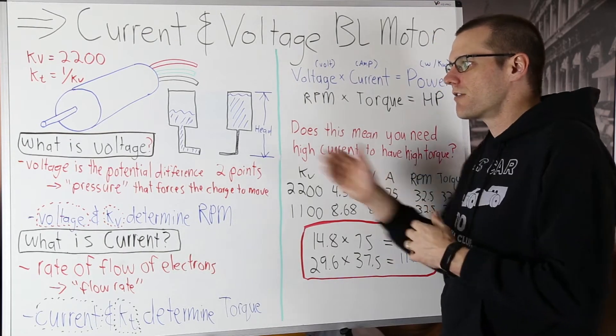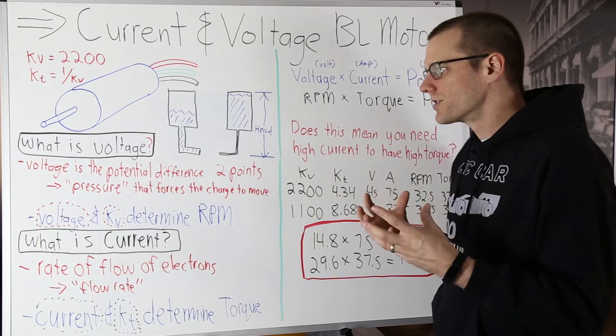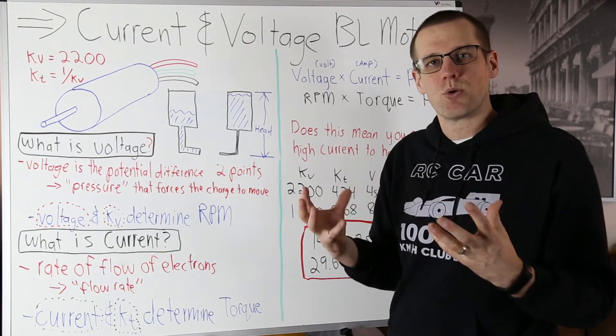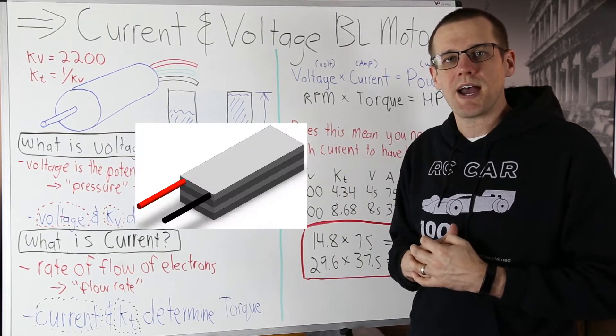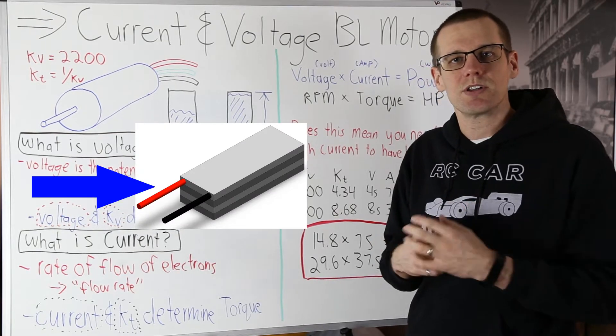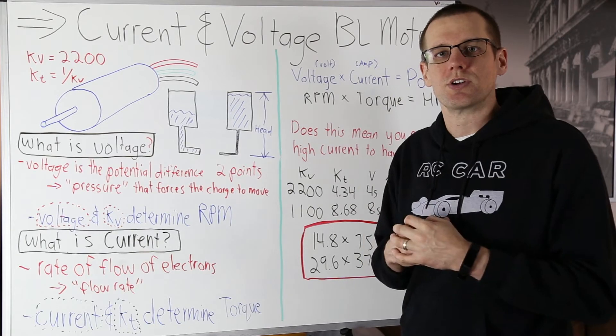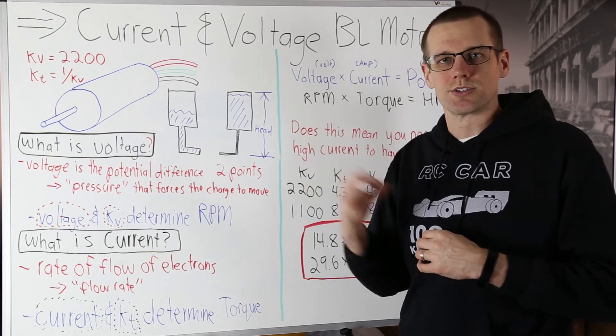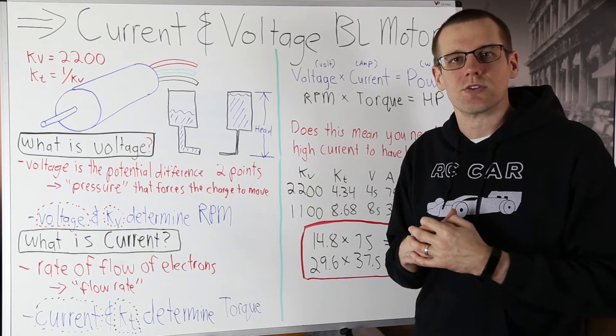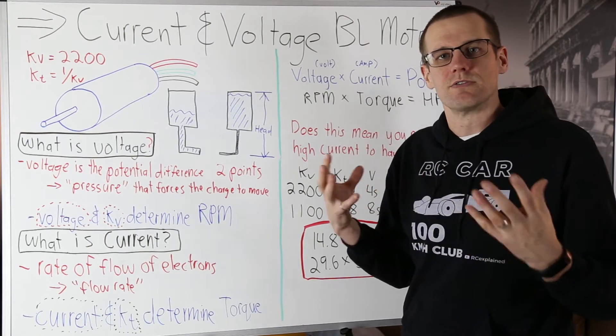Now let's go ahead and start off with what is voltage. Voltage is the potential difference between two points. If we look at our battery pack, our battery pack has a positive terminal and it also has a negative terminal.